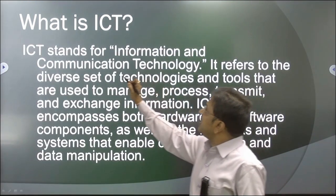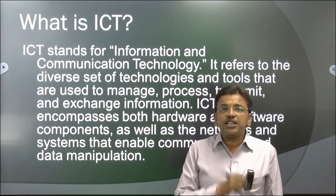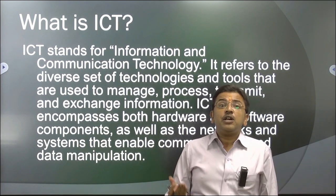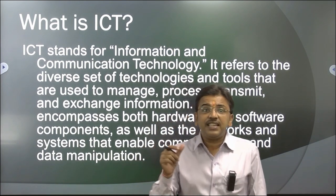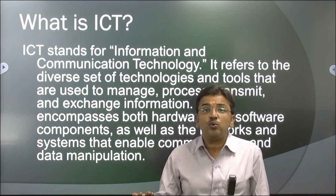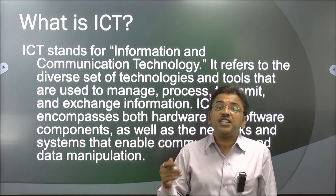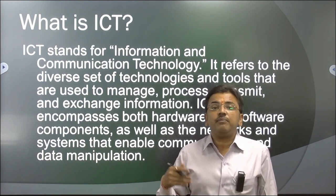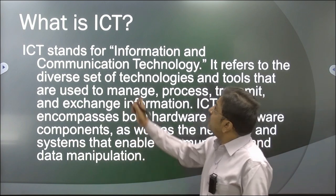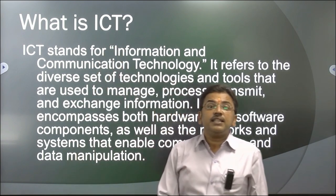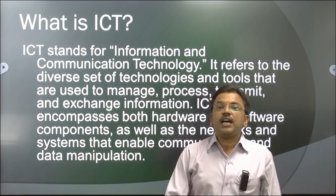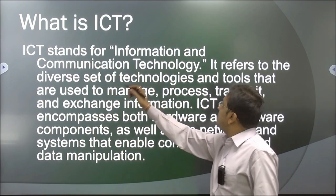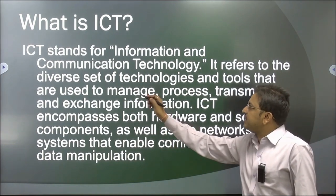ICT is composed of three words: information, communication, and technology. Information means the data which is highly useful for research. This data needs to be communicated to the person who requires it — that is the communication medium. And how you communicate it is through technology. Therefore this term came into existence: information is communicated by the help of technology.